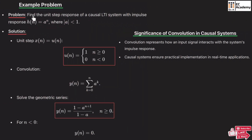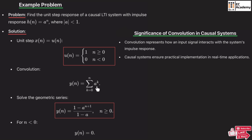To understand the causal LTI system, let us take an example. We need to find the unit step response of a causal LTI system with impulse response h(n) = aⁿ, where |a| < 1. Since the problem asks for unit step response, x(n) = u(n), where u(n) = 1 for n ≥ 0 and 0 for n < 0. We write y(n) = Σ(k=0 to n) aᵏ · u(n−k) = Σ(k=0 to n) aᵏ, since u(n−k) = 1.